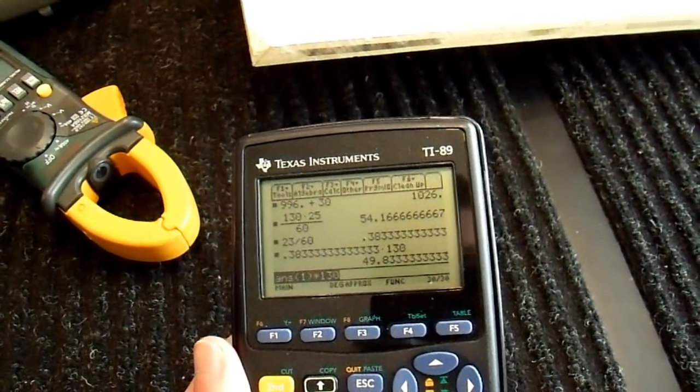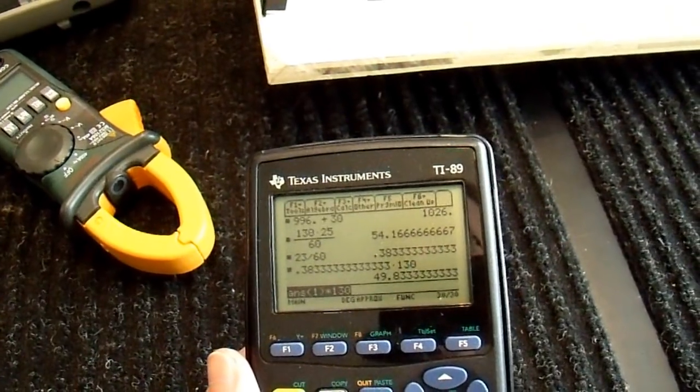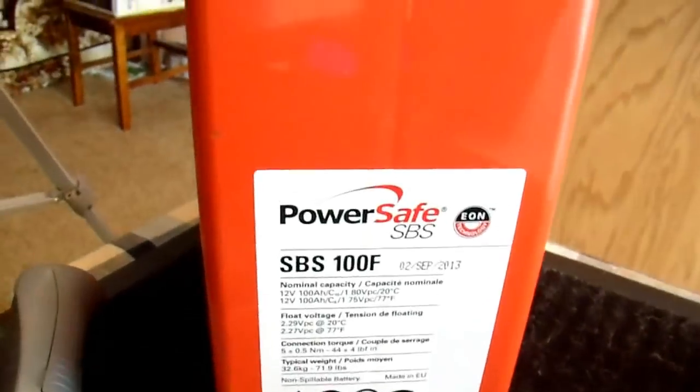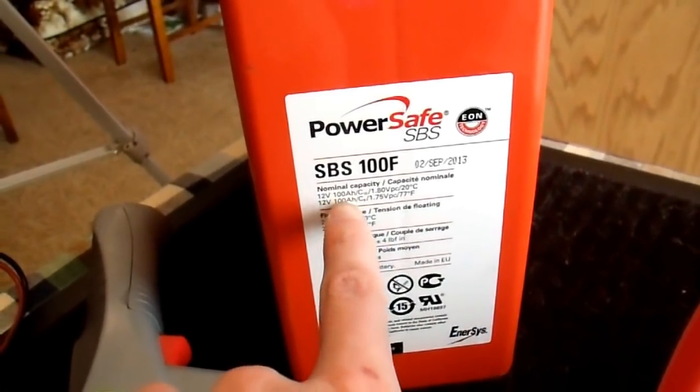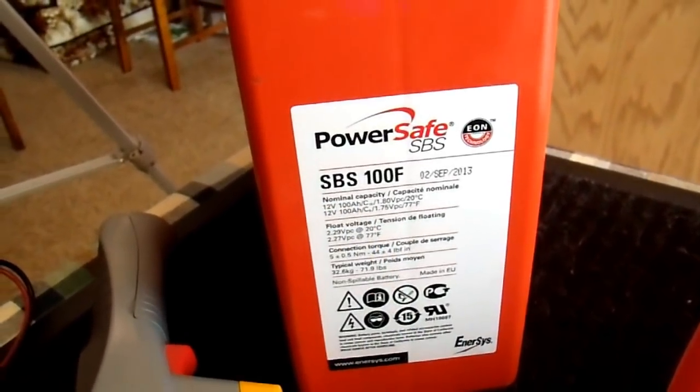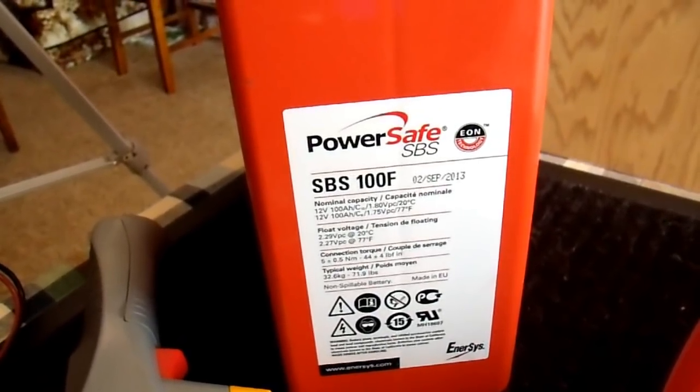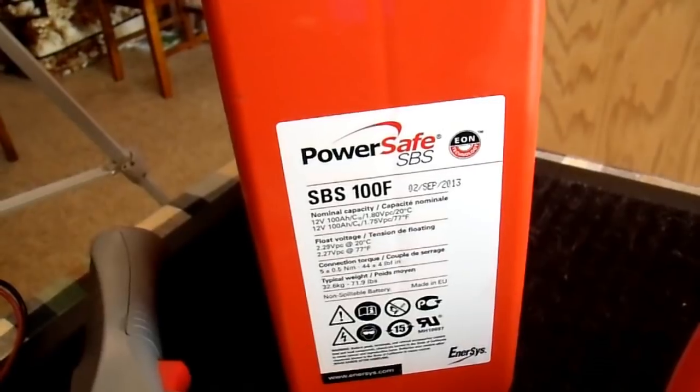50 amp hours? Well, wait a minute. I mean, look on the battery. It says right here. I don't know if you can read it on camera, but 100 amp hour capacity. And this is a top quality battery. This is more than a $400 battery. Why did I only get 50 amp hours? I got ripped off, right?